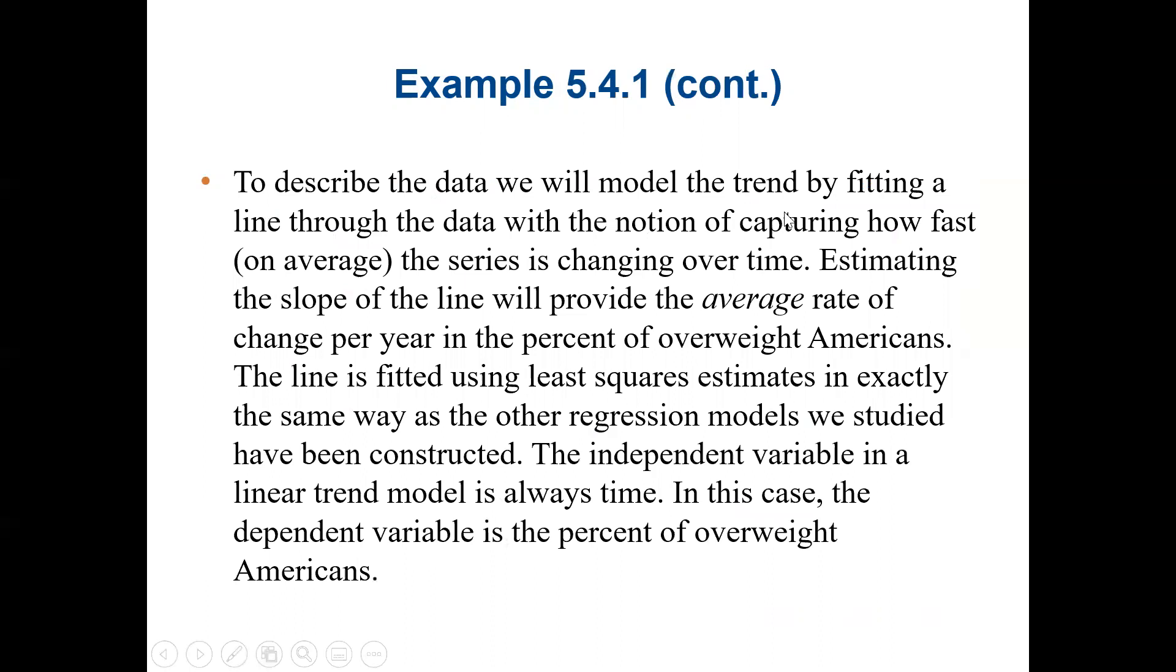To describe the data, we will model the trend by fitting a line through the data with the notion of capturing how fast on average the series is changing over time. Estimating the slope of the line will provide the average rate of change per year in the percent of overweight Americans. The line is fitted using the least square estimate in exactly the same way as the other regression models we studied in previous lectures. The independent variable in a linear trend model is always time. In this case, the dependent variable will be the percent of overweight Americans.